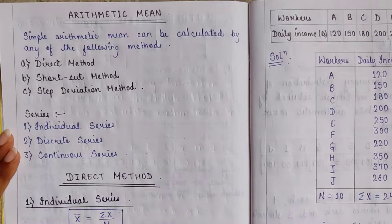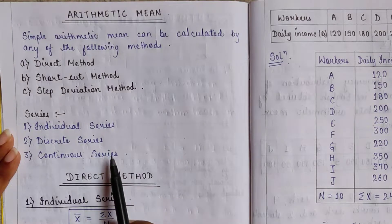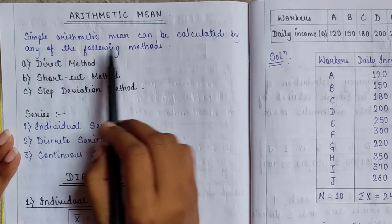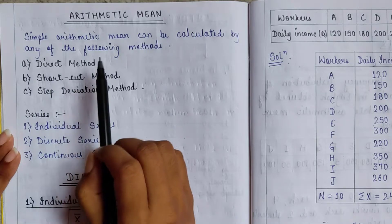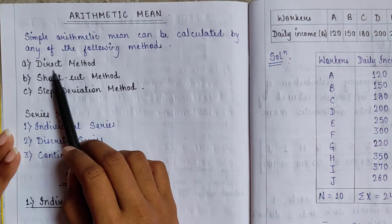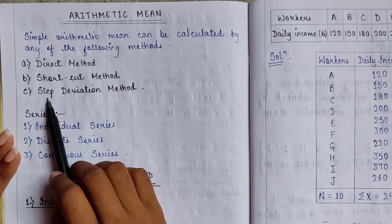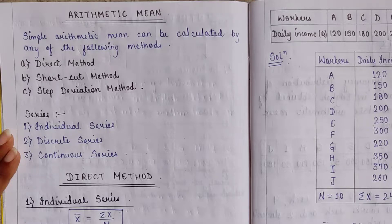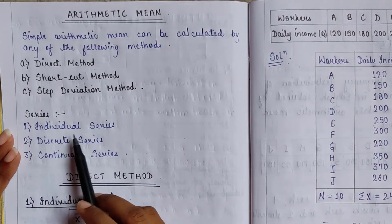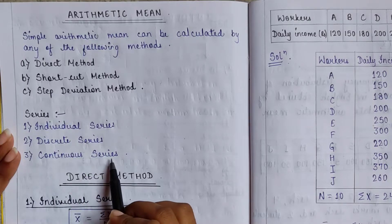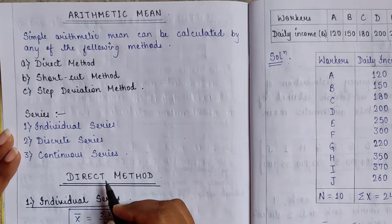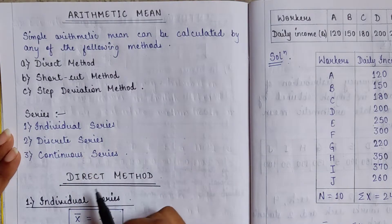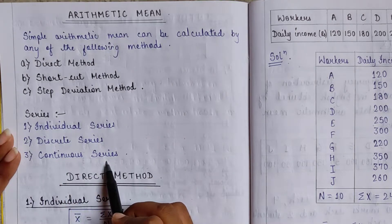In this video we'll solve questions of individual series, discrete series, and continuous series with the help of the direct method. Simple arithmetic mean can be calculated by three methods: direct method, shortcut method, and step deviation method. There are three types of series: individual series, discrete series, and continuous series.